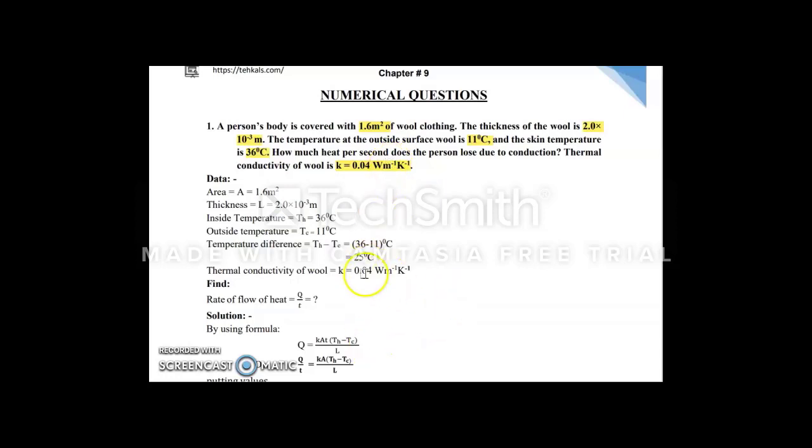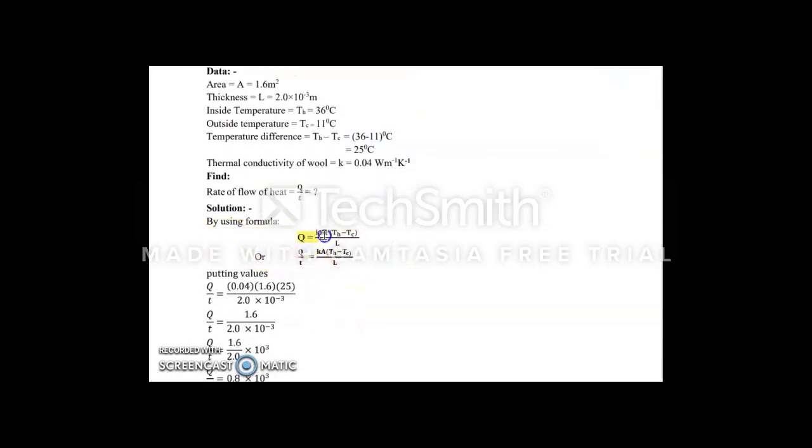So writing the data: area, thickness, temperature inside, outside. And we have temperature difference: 36 minus 11 equals 25. We have the formula: Q equals K times A times temperature difference divided by L. Now we have to find out the thermal conductivity per unit time, so Q divided by T we will take to this side.